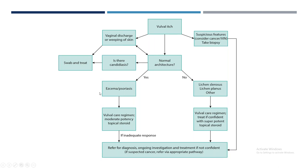For lichen sclerosis and lichen planus, the treatment is high potent topical steroids. For eczema and psoriasis, it is moderately potent topical steroids. For allergic dermatitis, you should not use steroids — only avoid the allergen. Once treatment is given, assess for response. If there is no response to treatment, refer the patient to the vulval clinic.